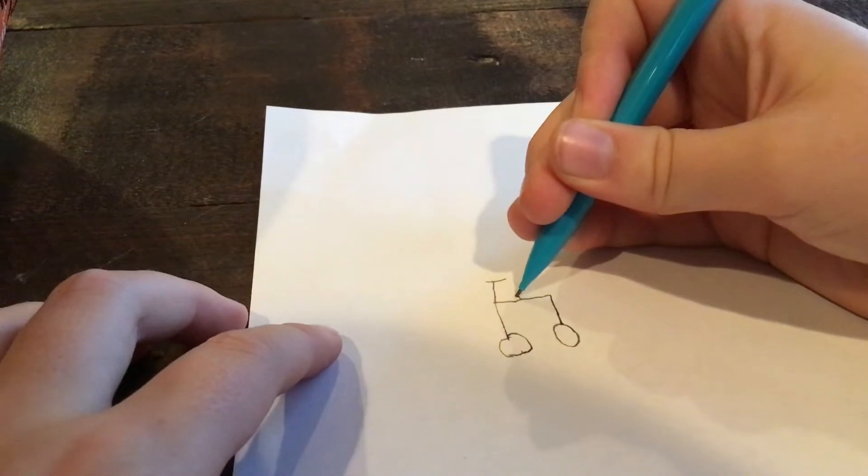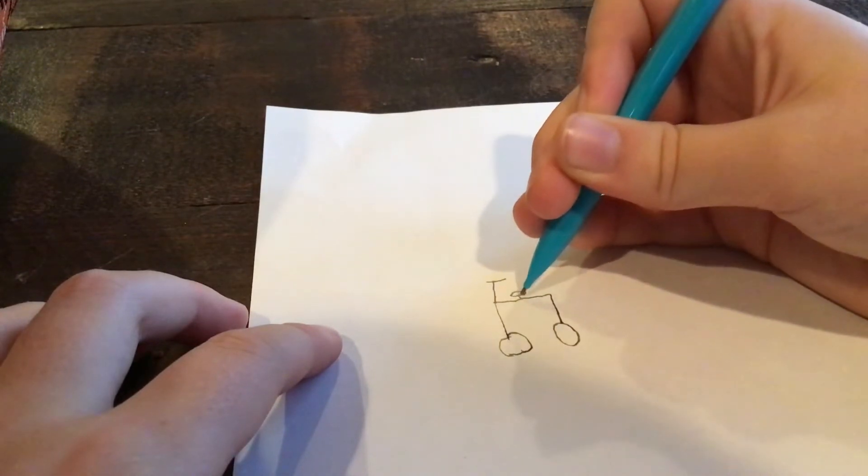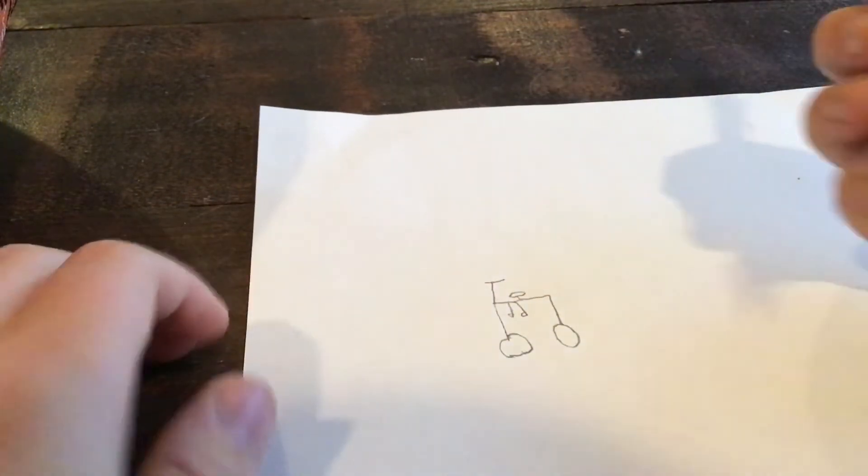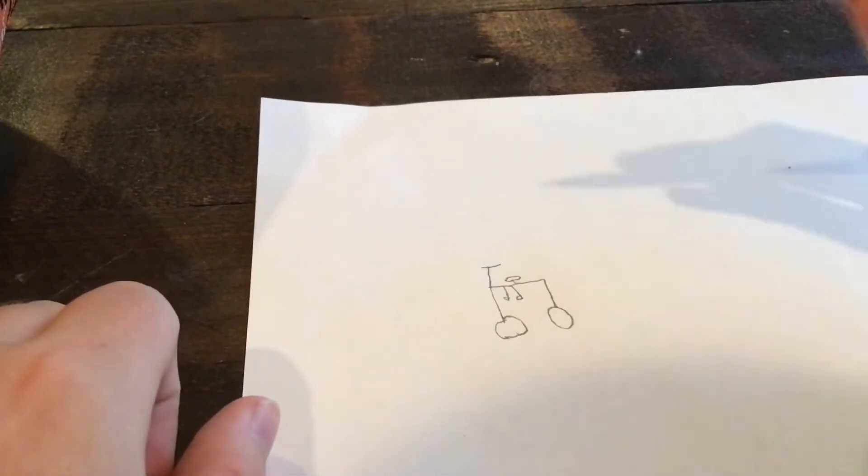draw the seat, then draw the pedals. And there, it's done. Draw a bike from a 50.